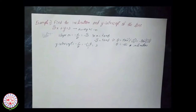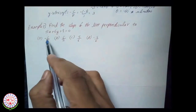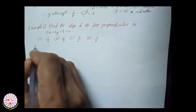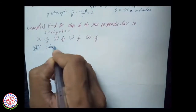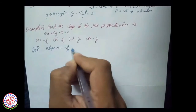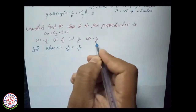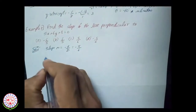Next example: find the slope of the line perpendicular to 5x + 6y + 8 = 0. We have four options. To find the slope, remember m = −a/b. Comparing the equation, a = 5 and b = 6, therefore m = −5/6. You should be fast in the CET.